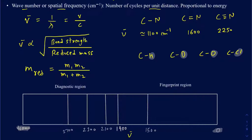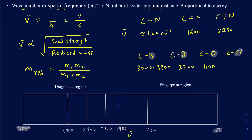The C–H bond shows up around 3,000–3,300 cm⁻¹, C–D around 2,200, C–O single bond around 1,100–1,200, and C–Cl around 700 cm⁻¹. As reduced mass increases, wave number decreases. Those are the two main factors — bond strength and reduced mass — that determine where a particular bond shows up in the IR spectrum.